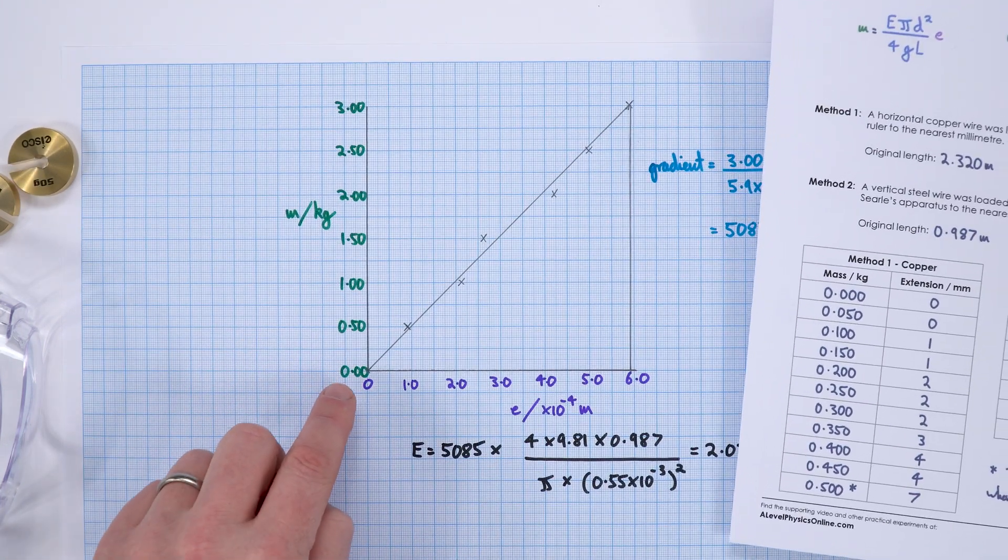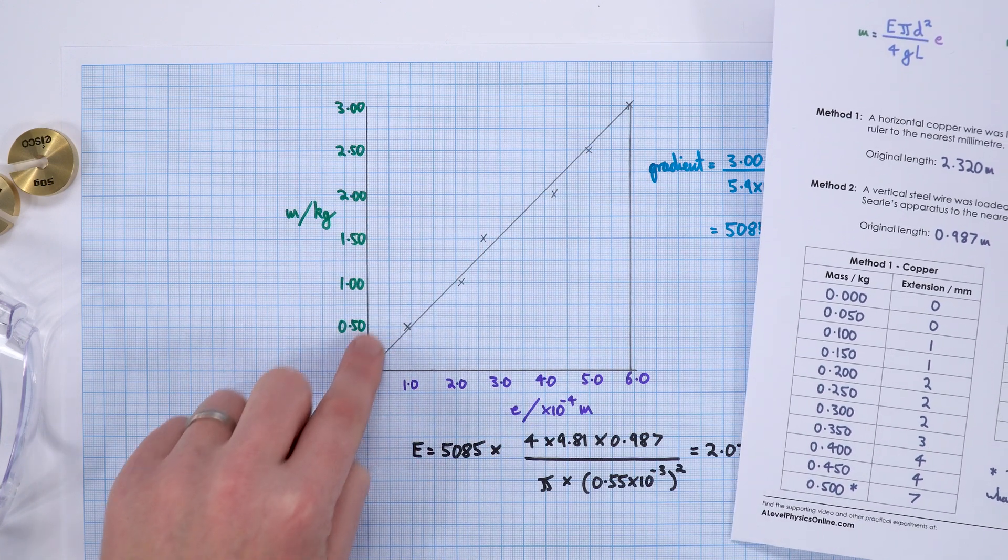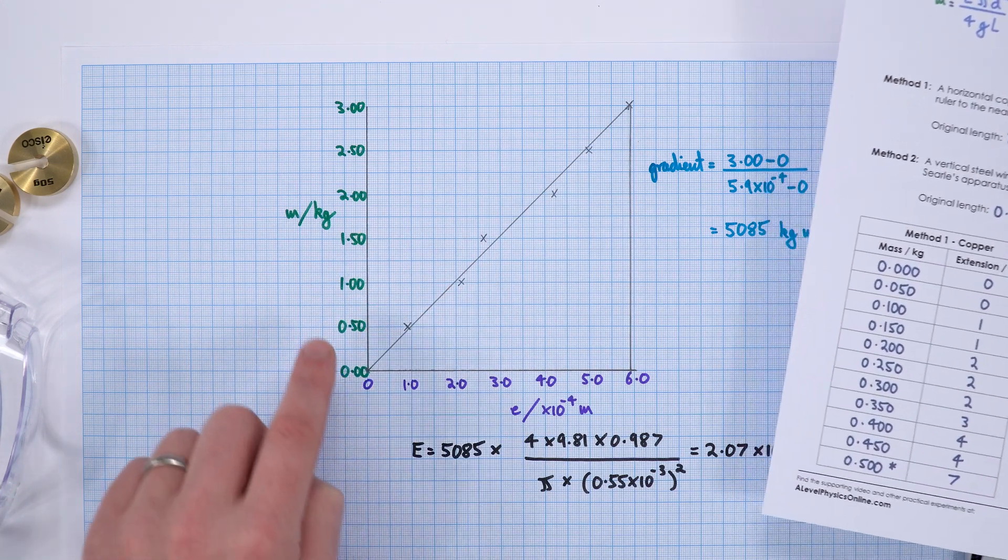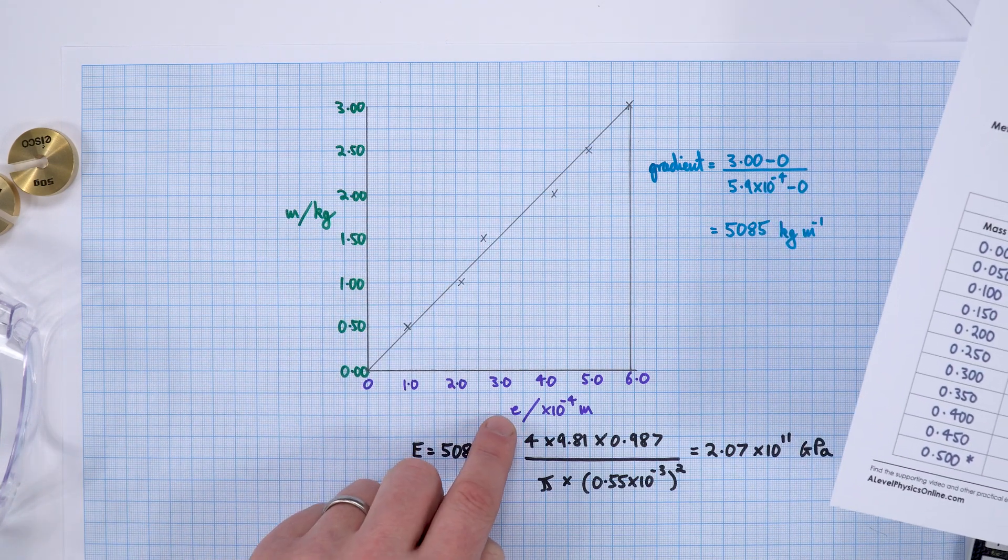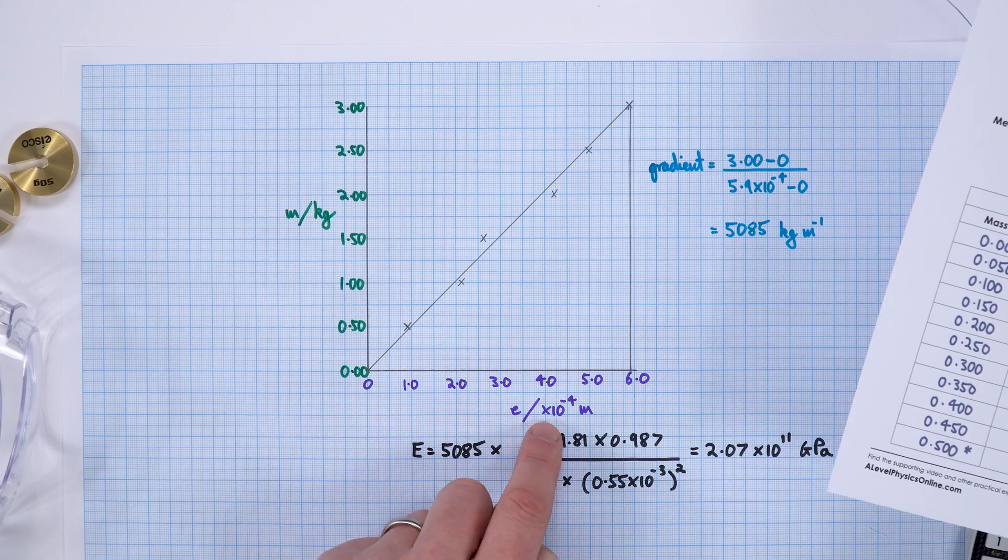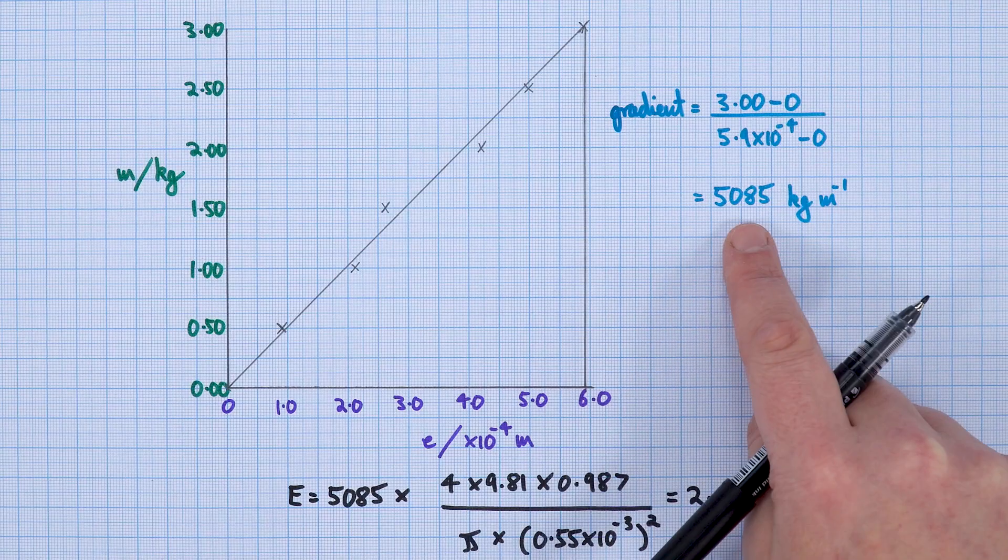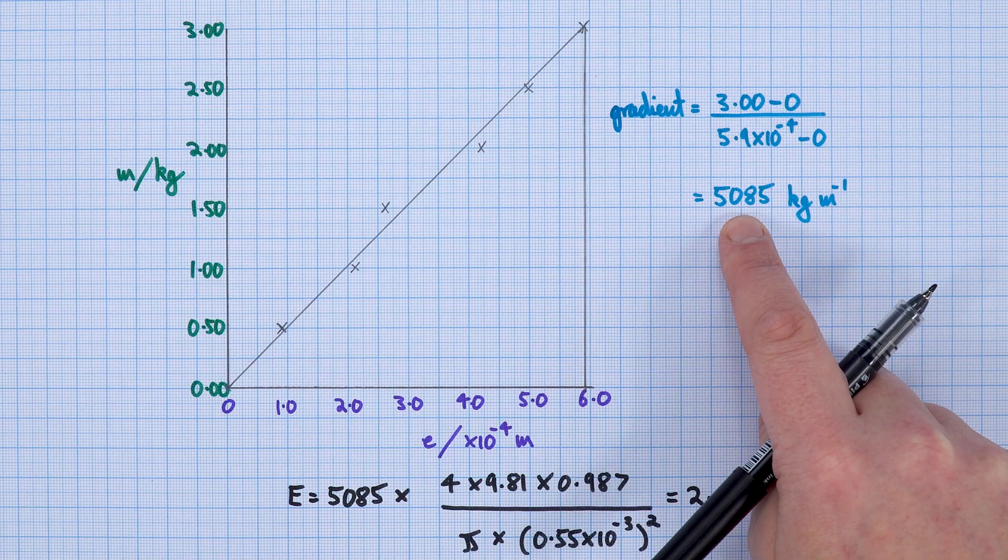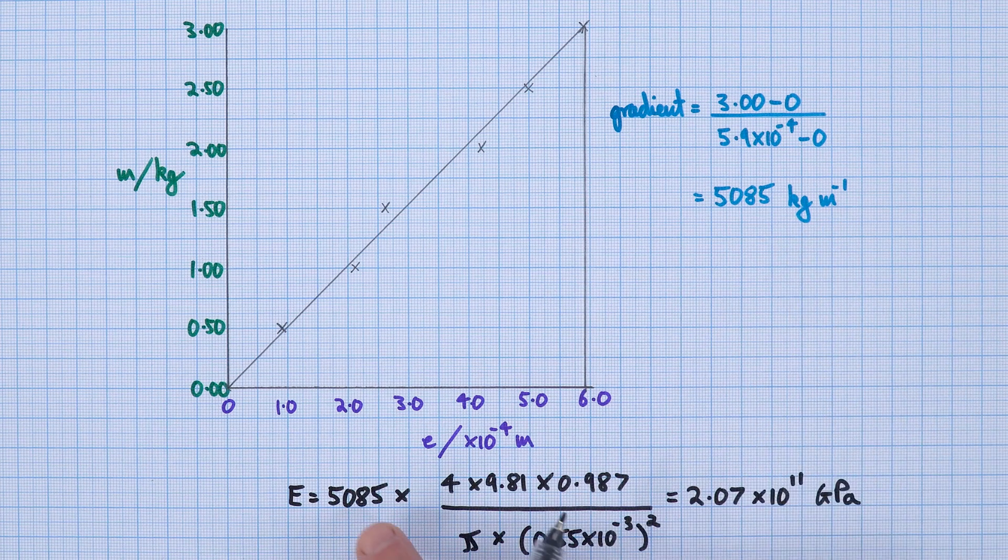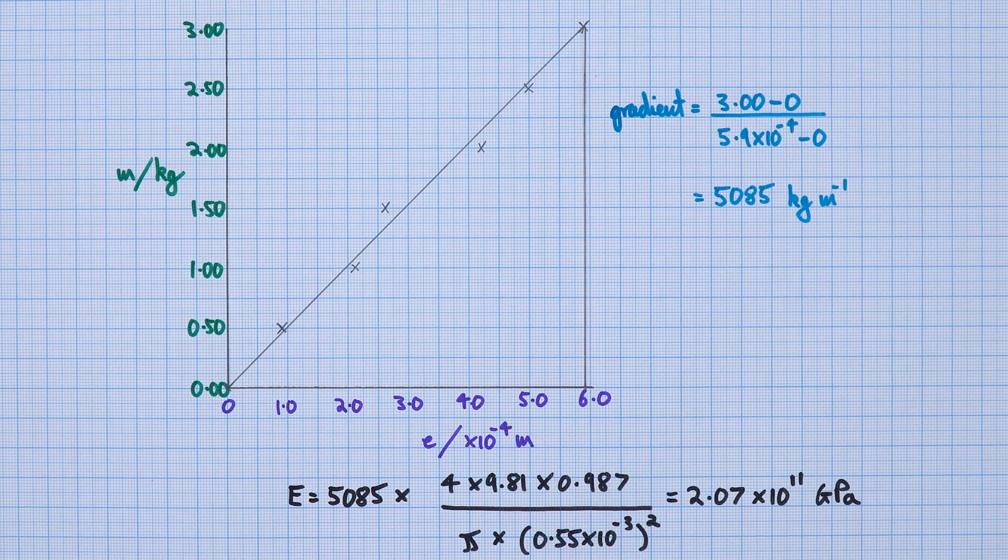When I plotted it on a graph, we had a straight line, so we didn't get into plastic deformation. I had my extension here in 10 to the minus 4 meters, and when I worked out the gradient, it was 5085 kilograms per meter. Again, I multiplied it by the original length.